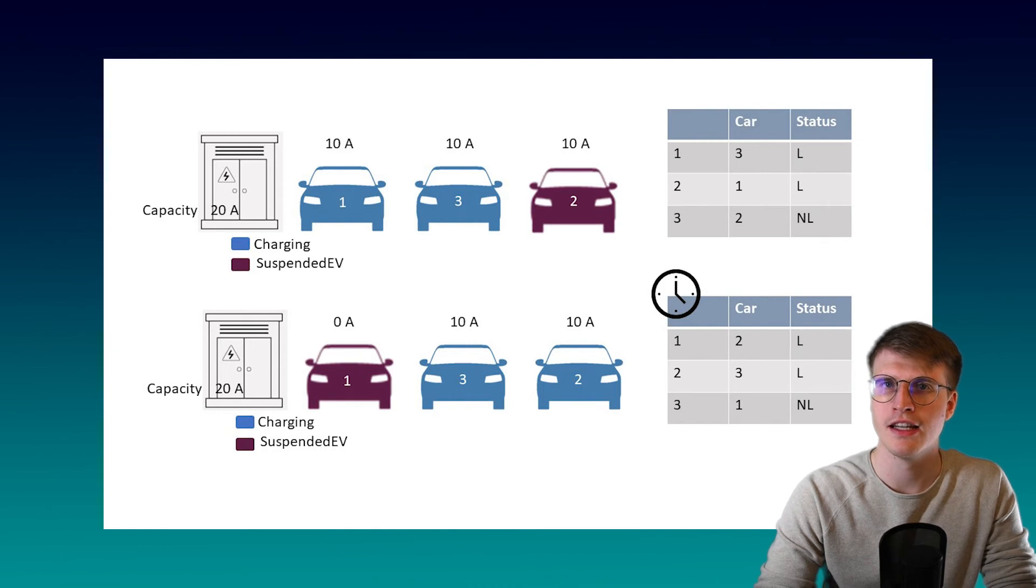This means that the load management system creates a list of all the cars that are connected to the charging point. In the first position is the car that I connected last and in the last position is the car that came first.